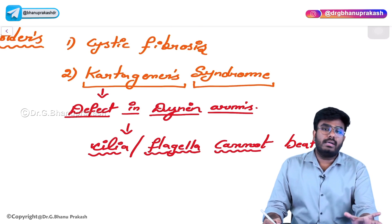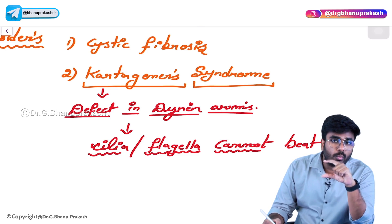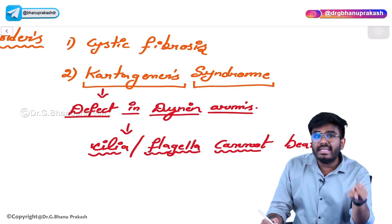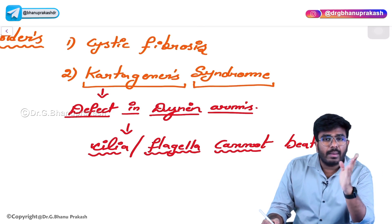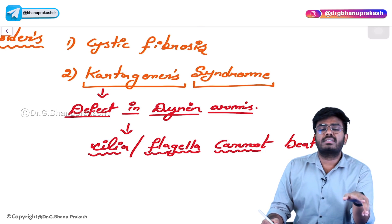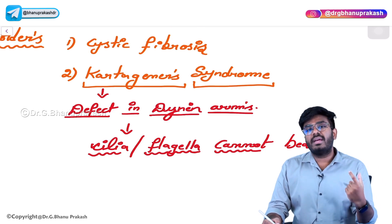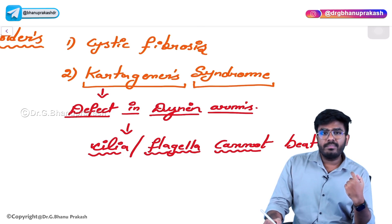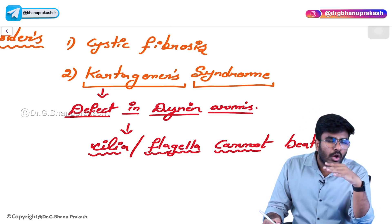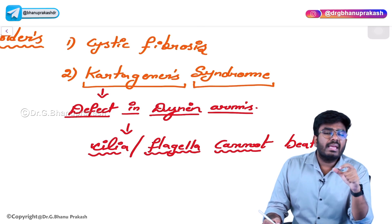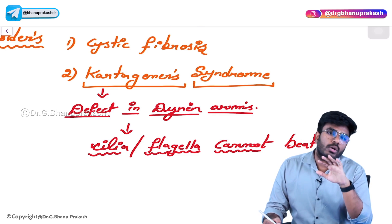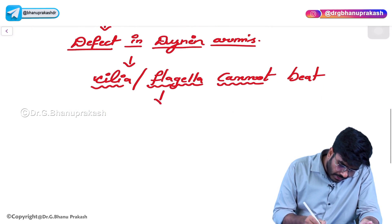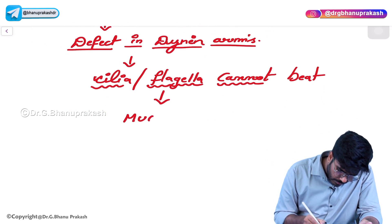This is important in the respiratory system because in the conducting zone, the lining epithelium is pseudostratified ciliated columnar epithelium. Normally, cilia with the help of their movement clear the mucus or sputum. In a person having Kartagener's syndrome, there is a defect in the dynein arms in the cilia, so the cilia are not beating. If the cilia are not beating, mucus cannot be cleared from the respiratory tract, and mucus plugging will happen.